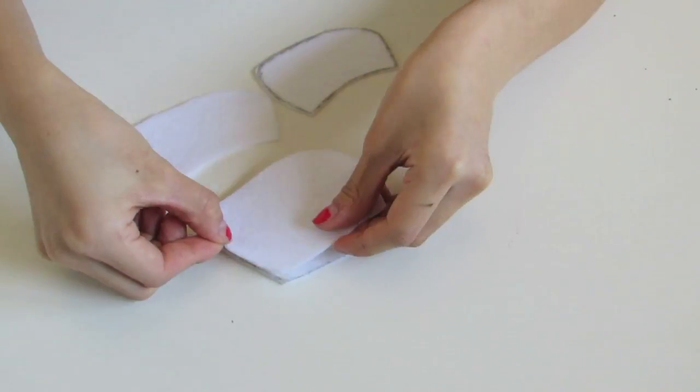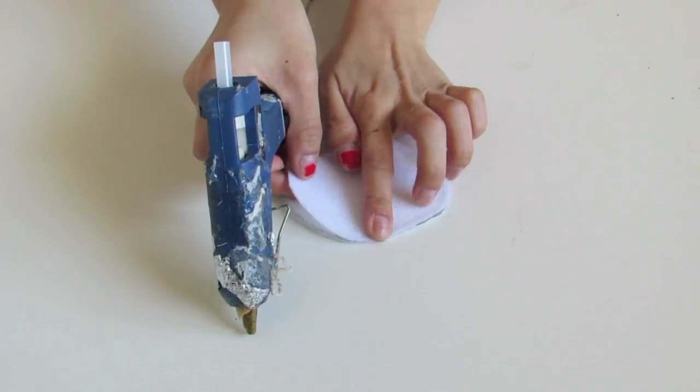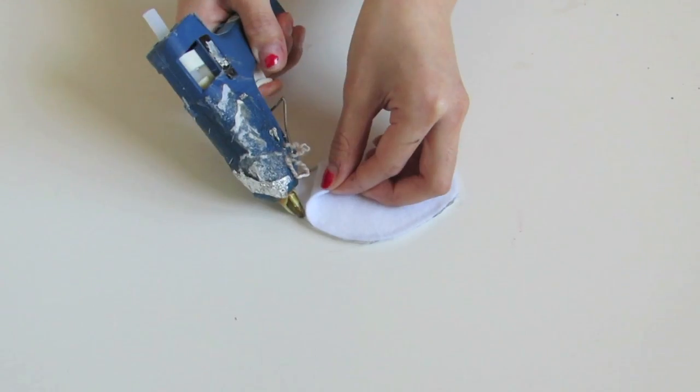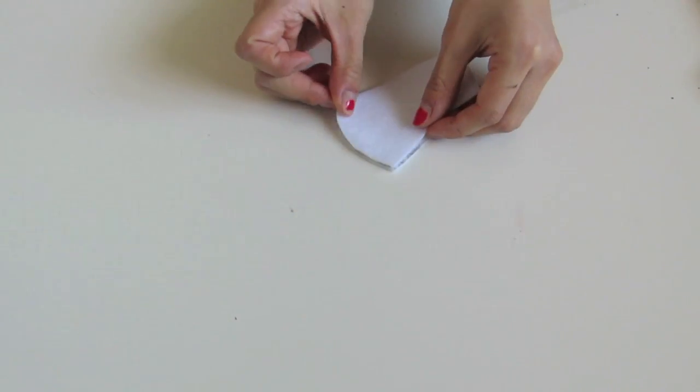Next, we're just going to be gluing the two pieces of the feet together. And again, I would suggest drawing the feet part connected to the body when you're doing that. But if you didn't do that, we're just going to be gluing these together and make sure to leave an opening.